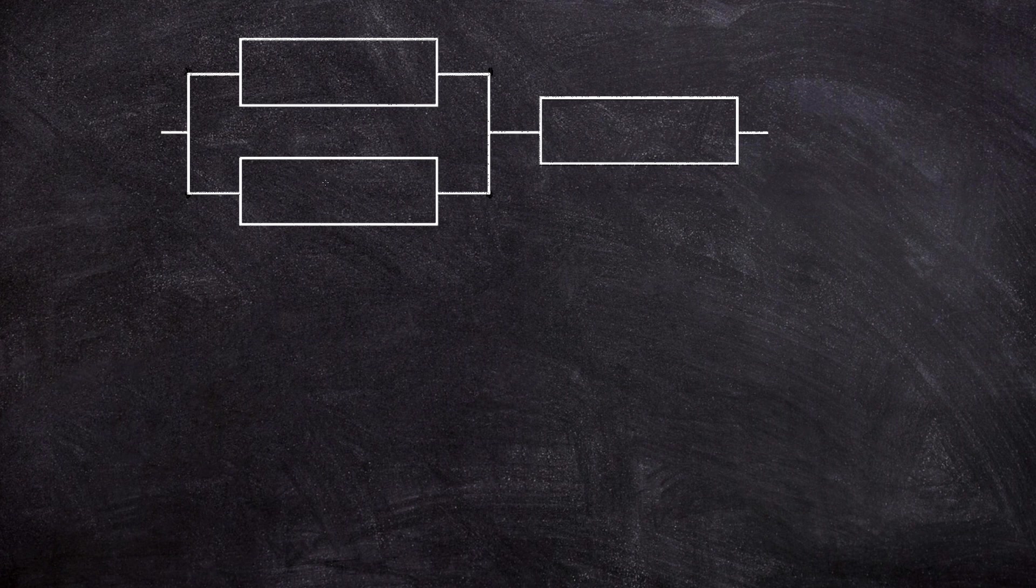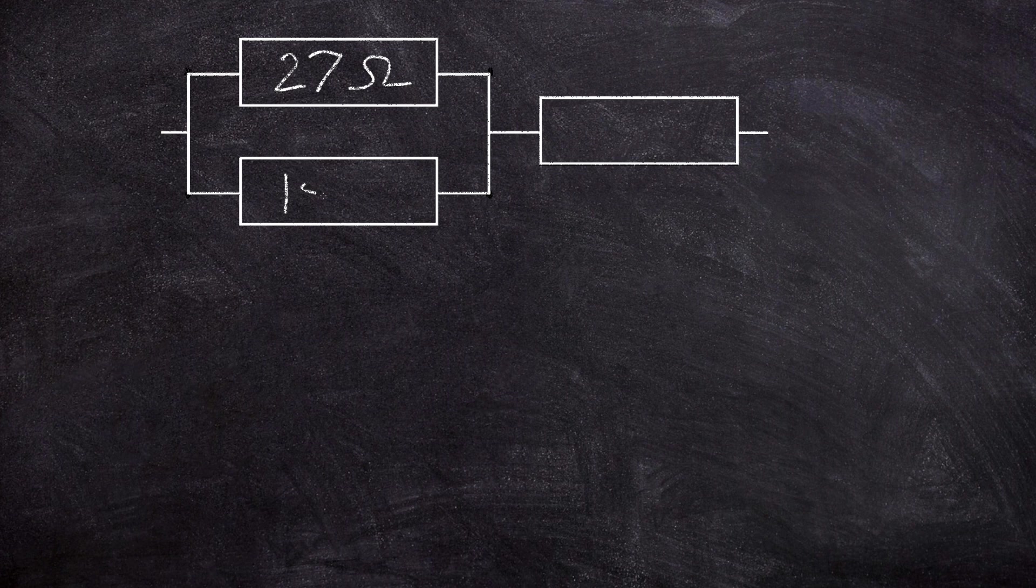Okay, so we've got a representation on the screen now of what our three resistors look like, so we'll just make a note of which one is which. So this here is our 27 ohm resistor, this is our 18 ohm resistor, and over here we've got our 10 ohm resistor.